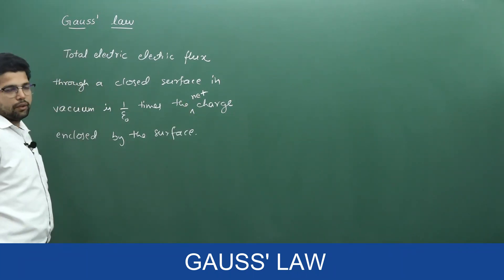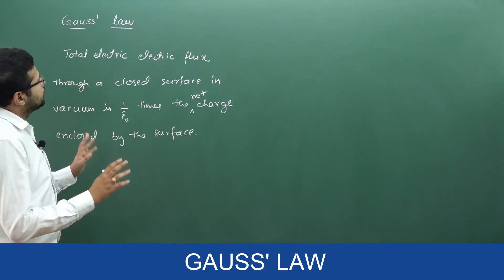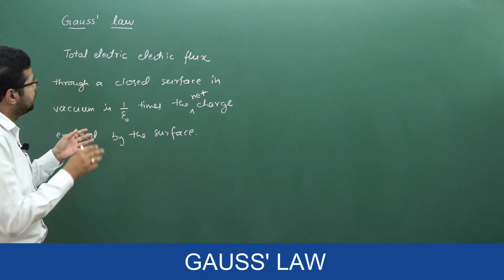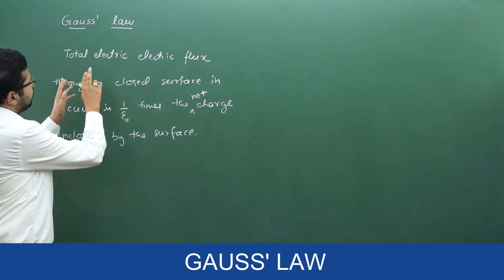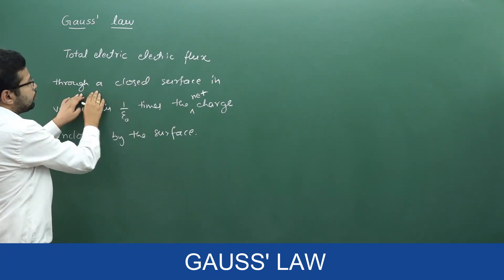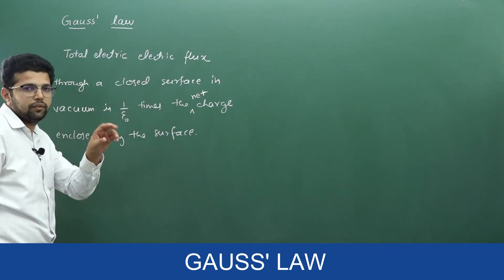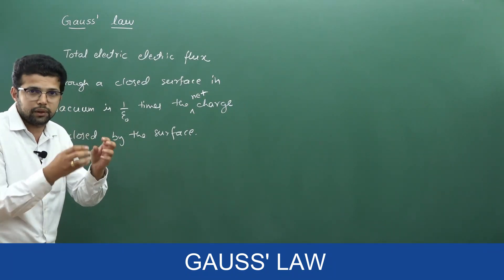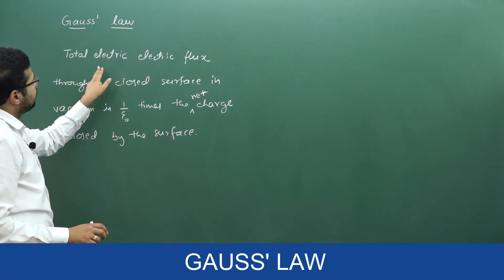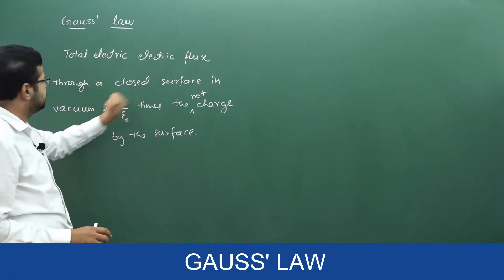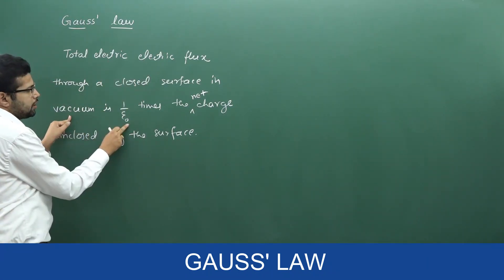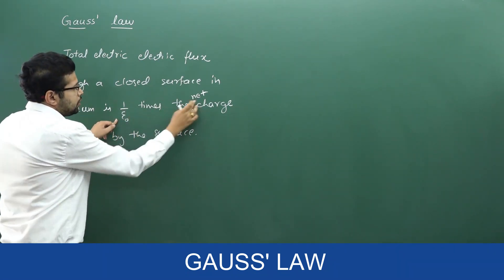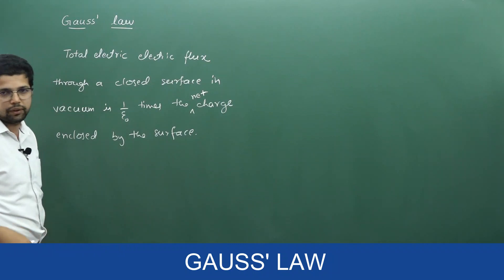Most of the times you might have observed I am not writing the definition while teaching, but this definition is very important. We have to be a little careful about the words: total electric flux through a closed surface. Flux is defined through a surface — in vacuum, that is why epsilon naught comes — and it equals 1 by epsilon naught times the total charge enclosed by the surface.